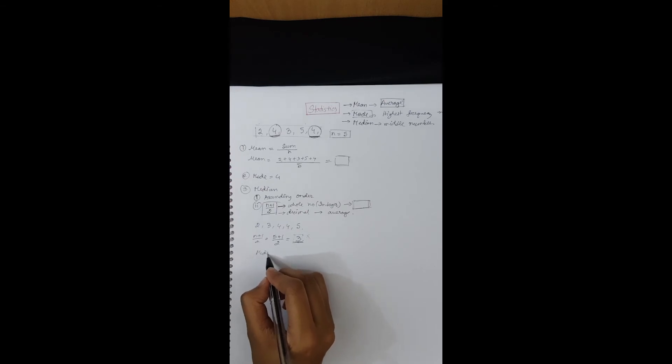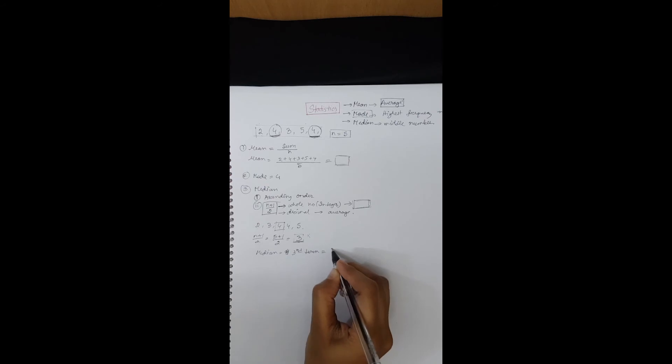So first, second, third - this is the median. Median is basically the third term, that is 4.